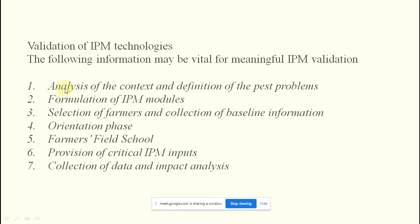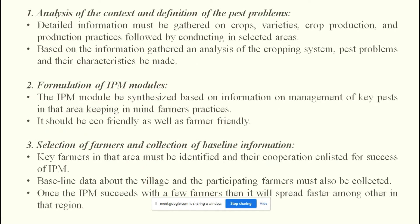For validating IPM techniques, the following information may be vital. First is analysis of the context and definition of the pest problem. Second is formulation of IPM modules. Third is selection of farmers and collection of baseline information. Fourth is the orientation phase. Fifth is the farmers field school. Sixth is provision of critical IPM inputs. Seventh is collection of data and impact analysis.